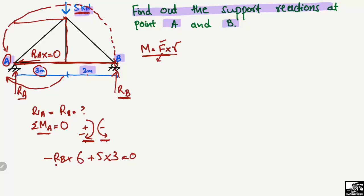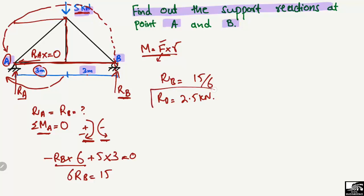Shifting terms to the right side: 6·RB = 15, so RB = 15 ÷ 6 = 2.5 kN. Therefore, the support reaction at point B is 2.5 kN.